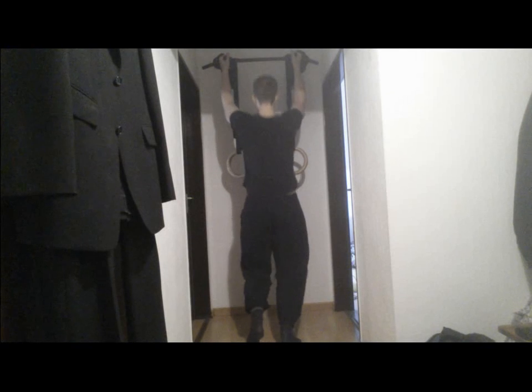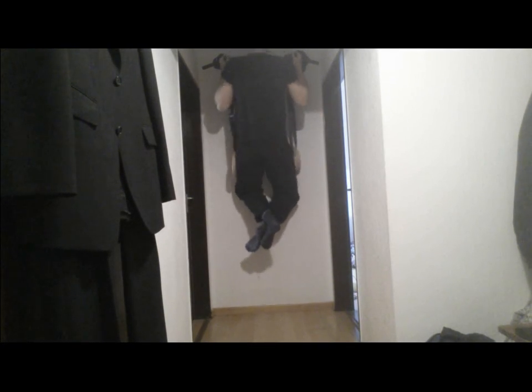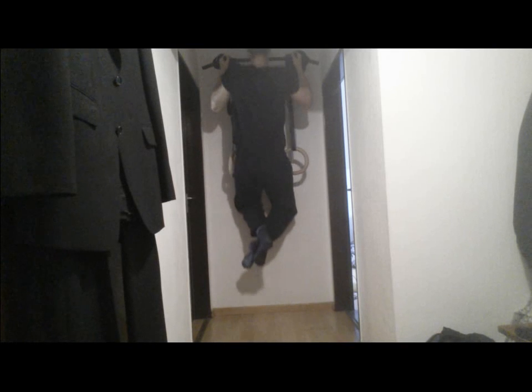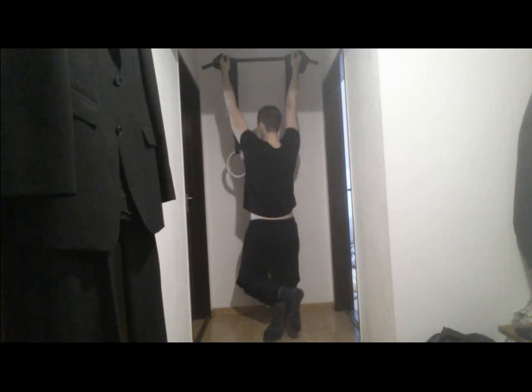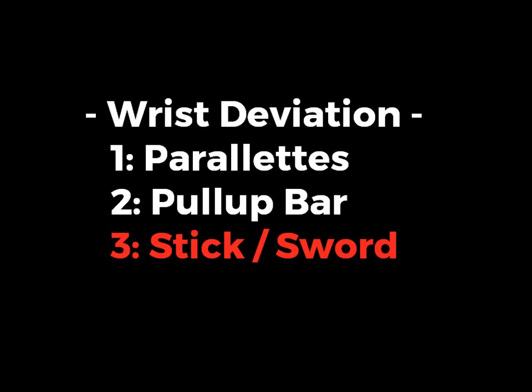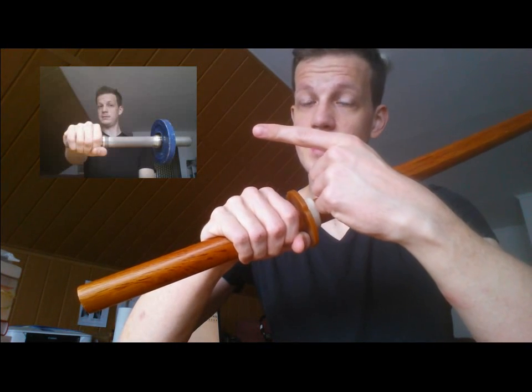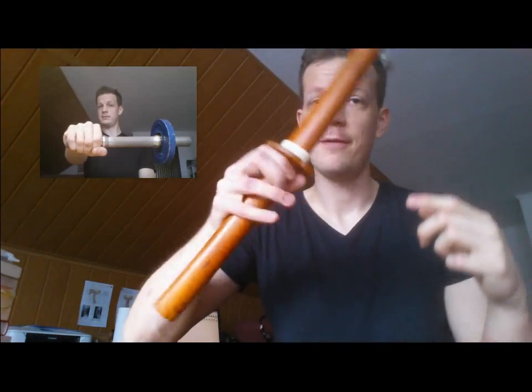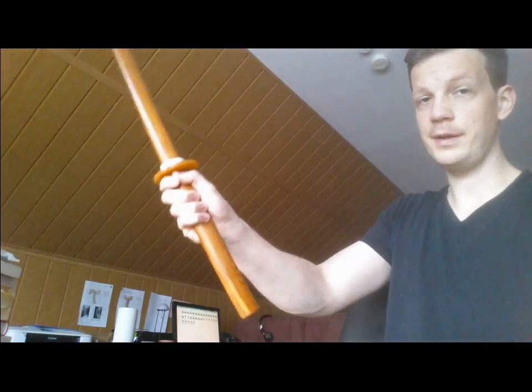If you don't have parallettes but you have a pull-up bar, you could do a neutral grip pull-up, which will also give you a good workout for your wrists and your radial and ulnar deviation. You go into neutral grip, go down, and then pull yourself up — repeat for as many reps as you see fit. For ulnar and radial deviation, please also see my other video on sword fighting, where I show some exercises that are really good for developing these movements.